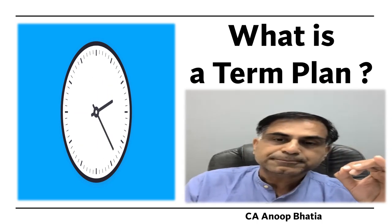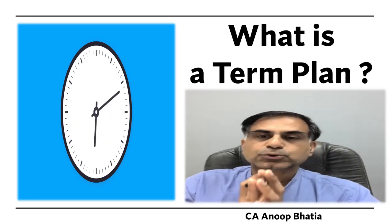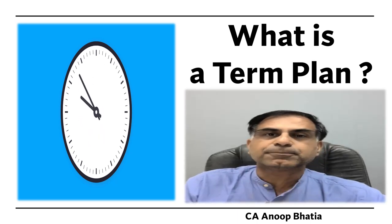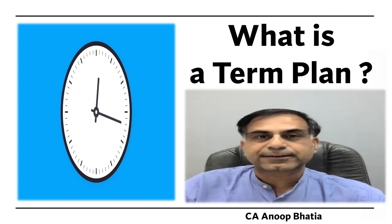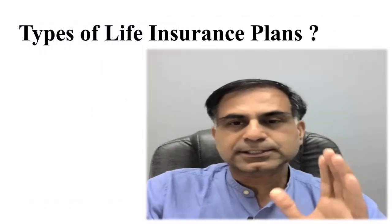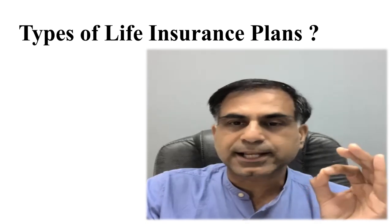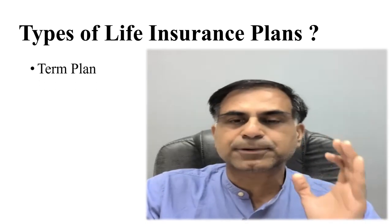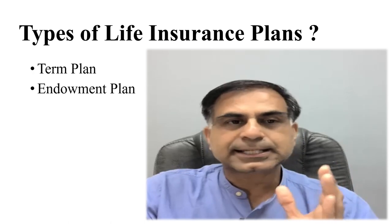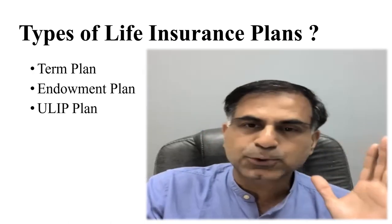And finally, it should help you make up your mind whether you need a term plan in your case or not. To begin with, my dear friends, I would suggest that there are three kinds of life insurance plans. One is the term plan, which we will discuss in detail today. Second is an endowment plan and the third one is a ULIP plan.